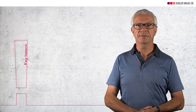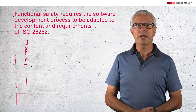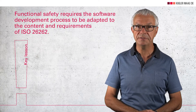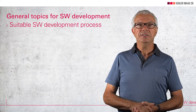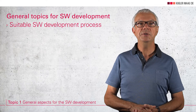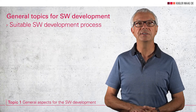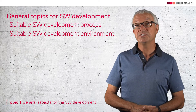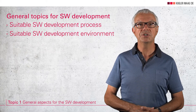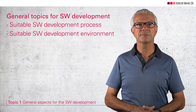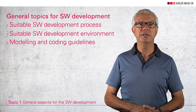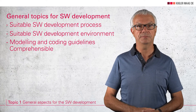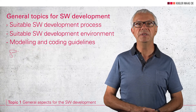Key lesson 4: functional safety requires the software development process to be adapted to the requirements of ISO 26262. It is a prerequisite that you develop software according to a suitable documented process that is believed in and applied — this process must be compliant with ISO 26262. You must have a suitable software development environment. You also have to comply with coding and modeling guidelines for which ISO 26262 lists a number of specific criteria, typically implemented in the industry by MISRA rules.